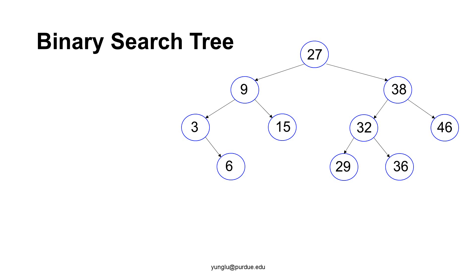We go further to check node 3. It has no left subtree. Its right subtree stores value 6, which is greater than 3. Next, we check node 38. Its left subtree stores 32, 29, and 36 — all smaller than 38. For node 32, the left subtree has 29, which is smaller than 32, and the right subtree has 36, which is greater than 32. We have checked every node. The property of binary search tree is satisfied, so this is a binary search tree.